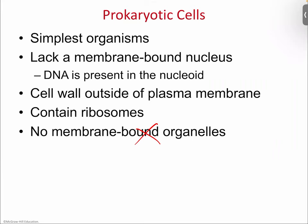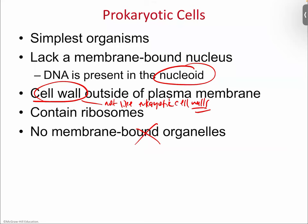Prokaryotes do have a central location for DNA — it's called the nucleoid. There's nothing special about it, it's just an area of the cell where they toss all the DNA. It's kind of like a college dorm without a closet — the clean clothes technically have a place, like the southeast corner of the floor, but it's not an actual organized structure. You have a place to put it, just not a formal one.